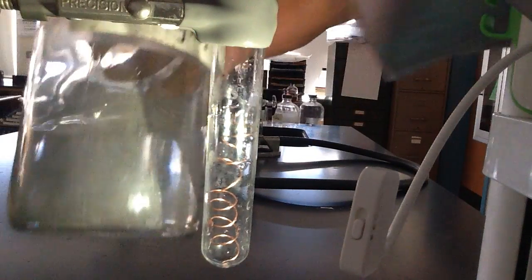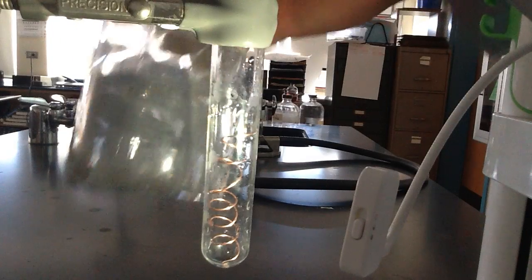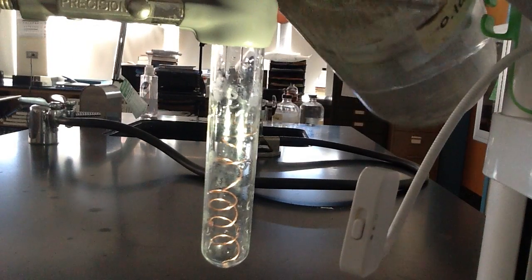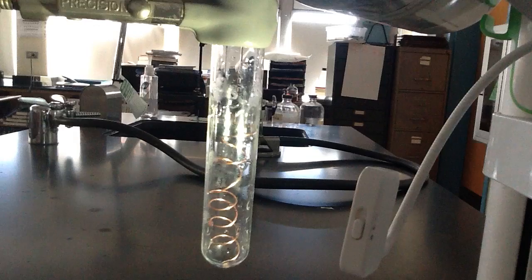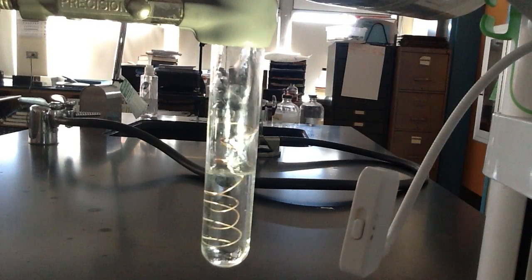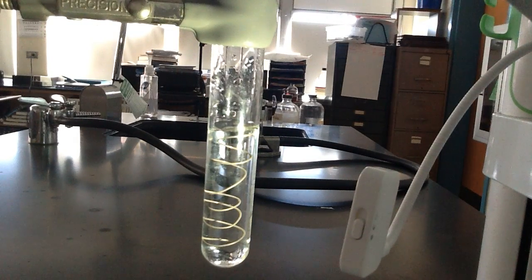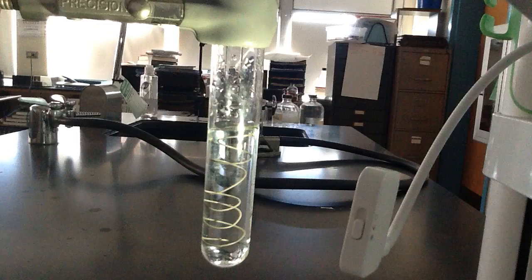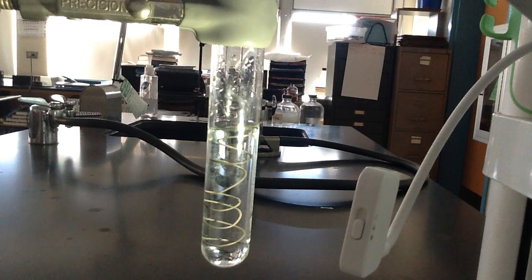Silver nitrate solution is kind of this grayish, brownish kind of thing, and I'm just going to pour a little in there to cover up the copper wire. It might take a few seconds for you to notice something.